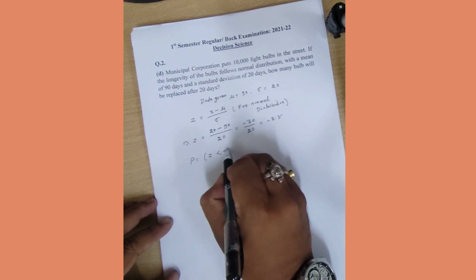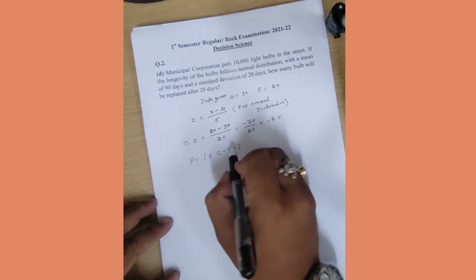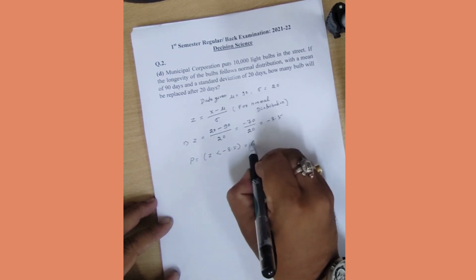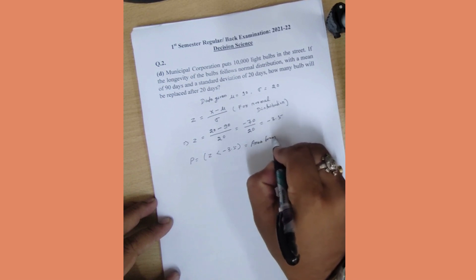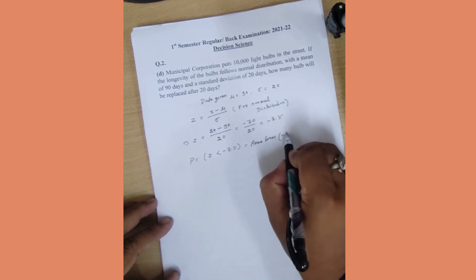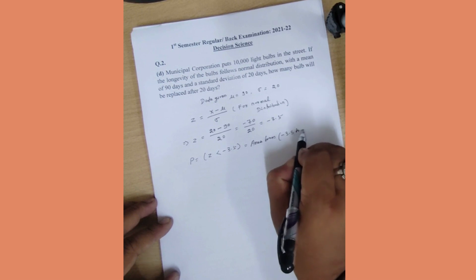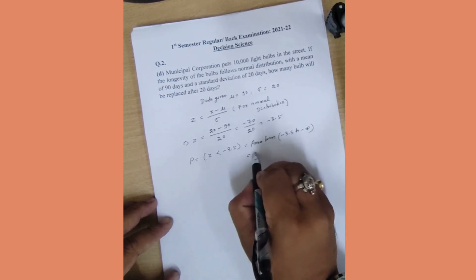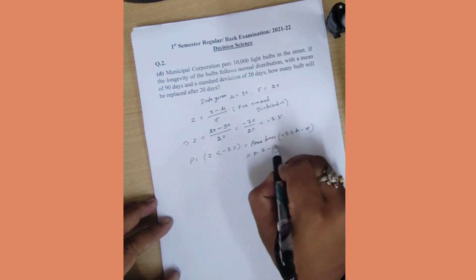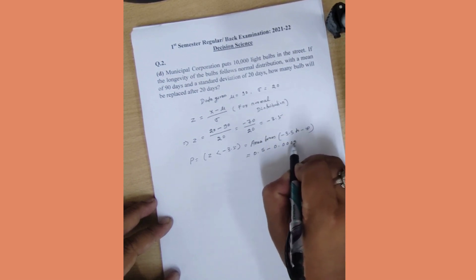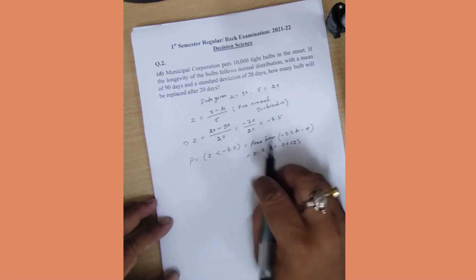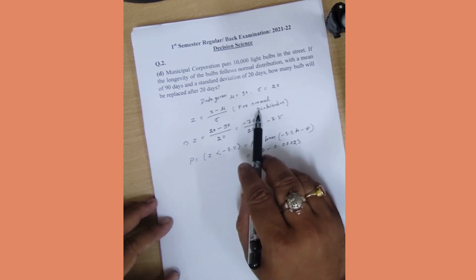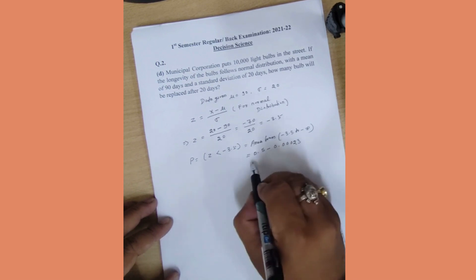So this is the z-value table. We choose area from minus 3.5 to minus infinity. So this value is 0.5 minus 0.00023. This data is from the z-table for normal distribution, so this value we check is 0.49977.